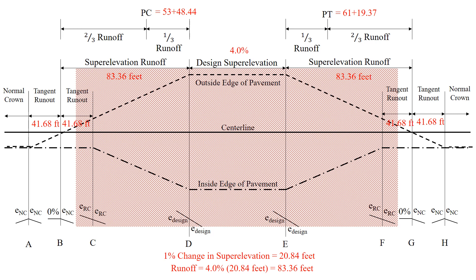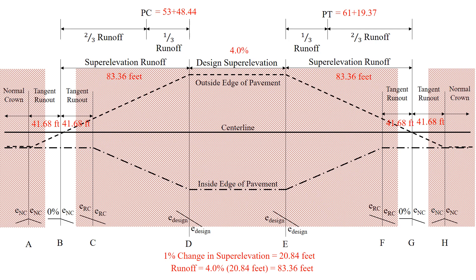Now we can start looking at where the cross slope is going to be less than or equal to 1%. We're not going to have any value lower than 1% from halfway between points B and C to halfway between points F and G — I'm shading that out in red. For the inside edge of pavement we never have a cross slope less than 2%, so we're really focused on the outside edge of pavement. The areas without cross-hatching represent the stationing we're looking for, where the outside edge of pavement is less than or equal to 1%. Each side of that is half of the tangent runout — a distance of 41.68 feet.